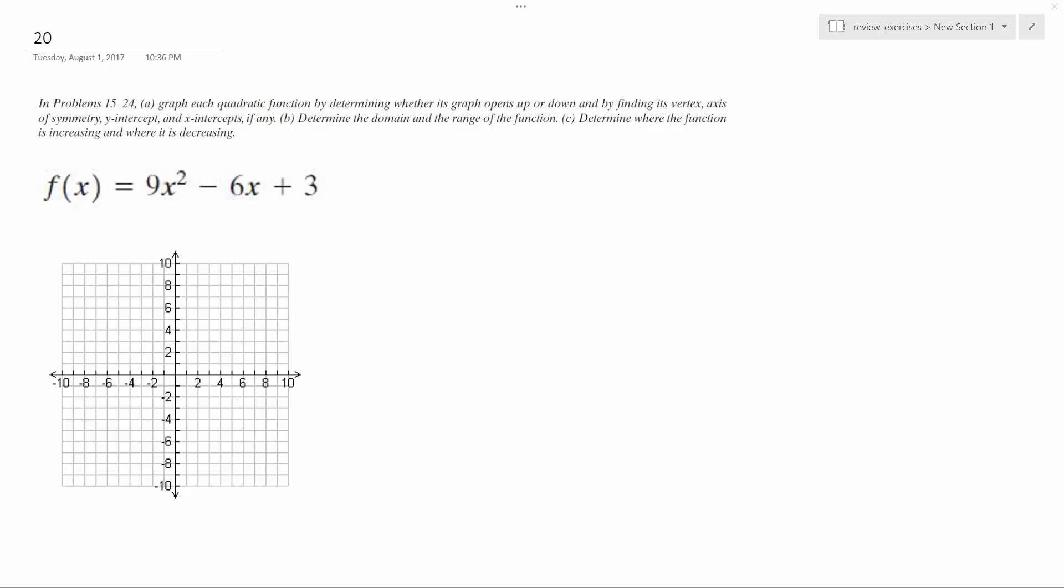We have this equation and want to determine all these things. Finding the vertex is where the line of symmetry is located, so we use negative b over 2a. In this case, opposite of negative 6, that's 6 over 2a, which is 2 times 9, which is 18, ending up being 1 over 3.